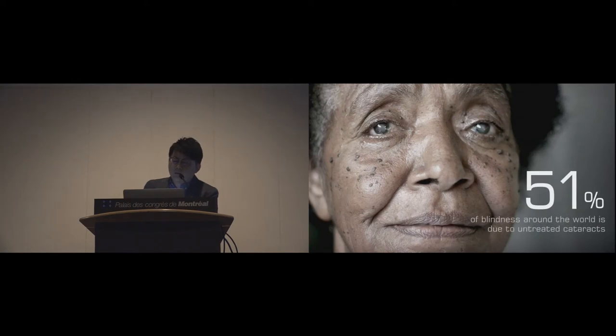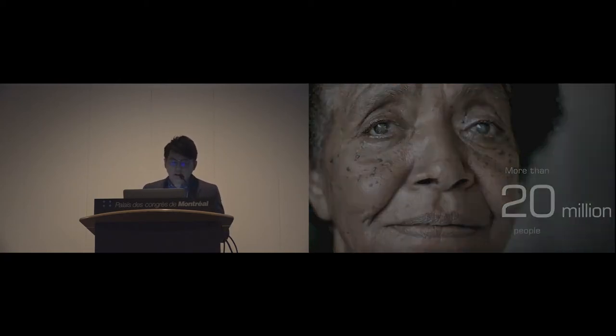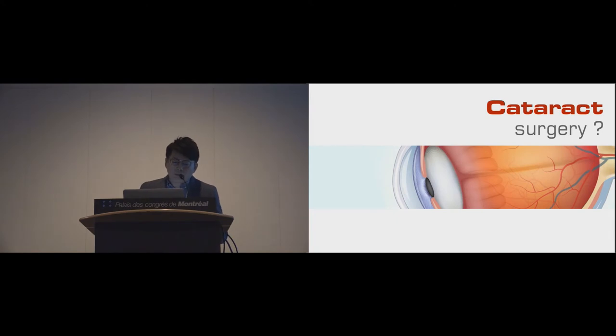According to WHO's report, more than half of blindness around the world is due to untreated cataract. We're preventing 20 million people from being blind. How to treat cataract? The goal of cataract surgery is to replace the opaque lens with artificial lens.